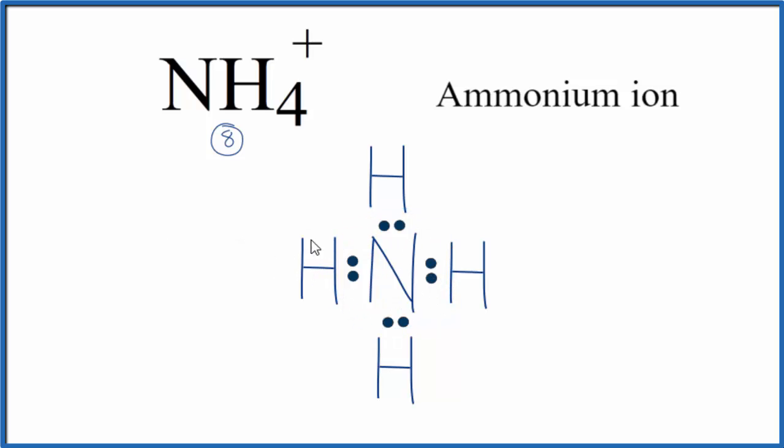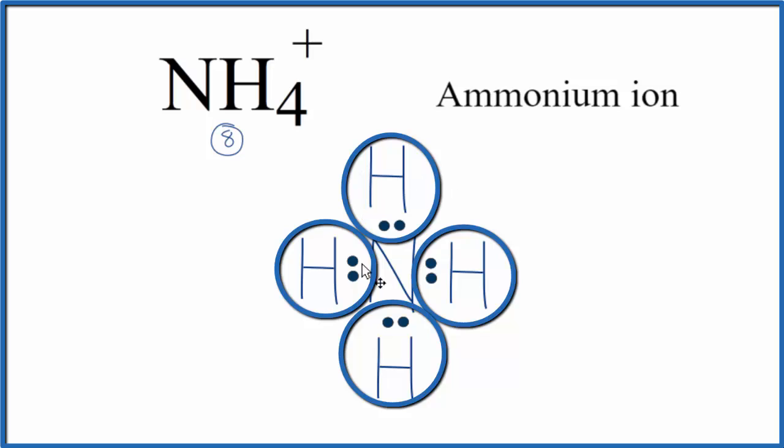Hydrogen atoms only need 2 valence electrons, so each one of these hydrogen atoms, that's okay as well. So this is the Lewis structure for NH4 plus.